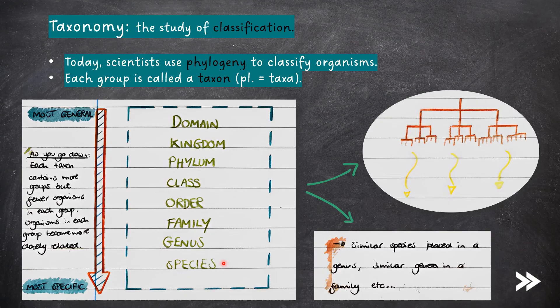If we look at how this classification system is structured, we need to start at the bottom. Similar species are placed in a genus; similar genera are placed in a family, and so on. As you go down, each taxon contains more groups, but there are fewer organisms within each group. Organisms in each group become more closely related.